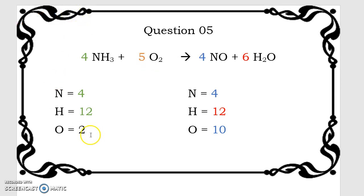So we're going to say five O2. Five times two is 10. I have four nitrogens on each side, 12 hydrogens, and 10 oxygens. This equation is balanced.